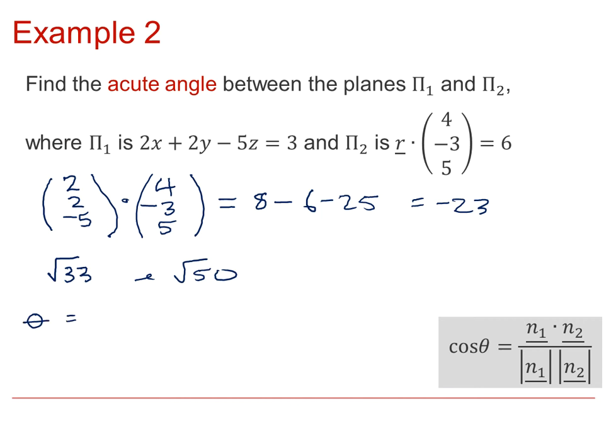So theta in this case will be cos to the minus 1 of minus 23, over square root 33, square root 50. This calculation will give an obtuse angle, in which case we would need to take it away from 180. So the fact that we get 124.5 means that the acute angle will be 55.5 degrees.